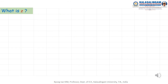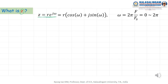First, what is Z? Z means R times exponential J omega. By using the Euler formula, we can rewrite this as R times (cos omega plus J sin omega). For this, we need the Euler formula. And here, omega equals 2 pi F divided by Fs. This is the normalized frequency.